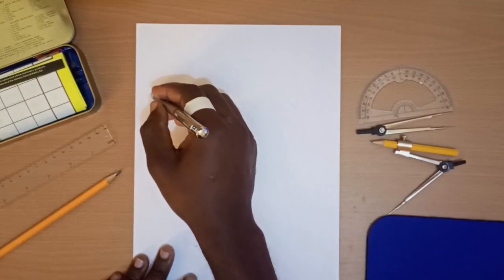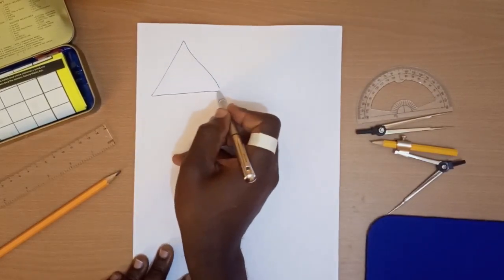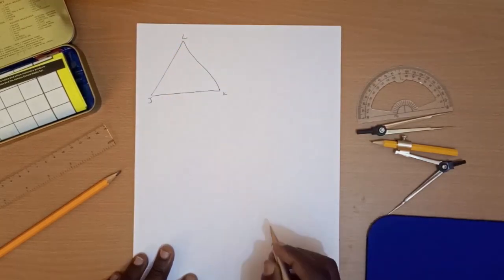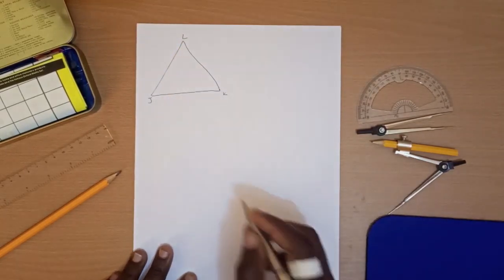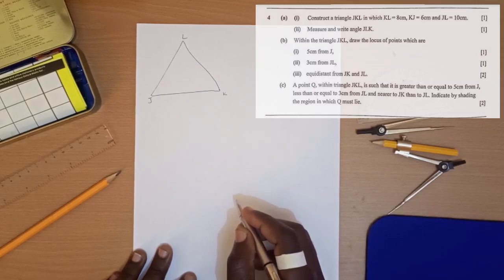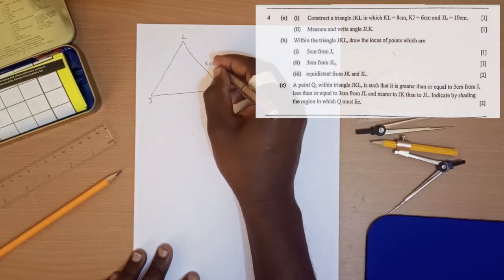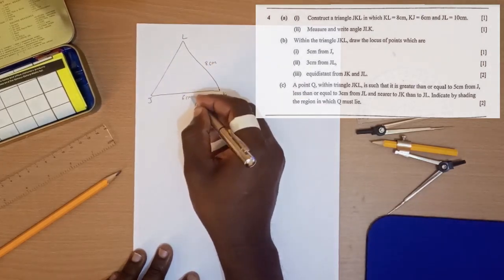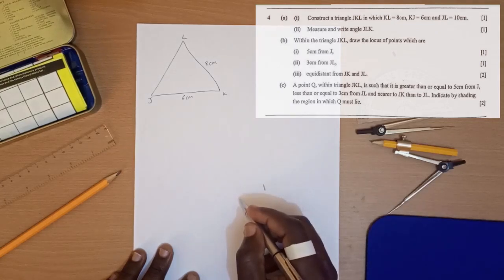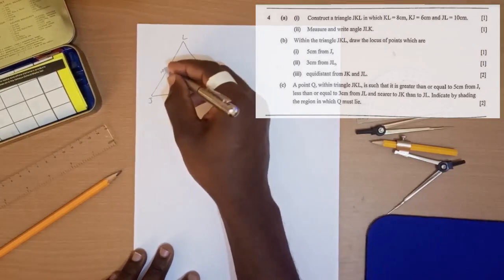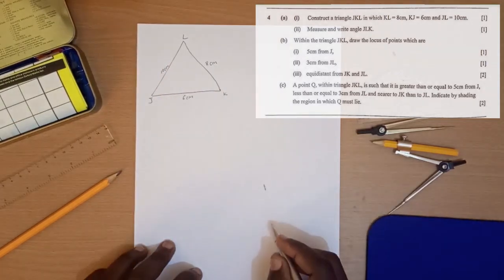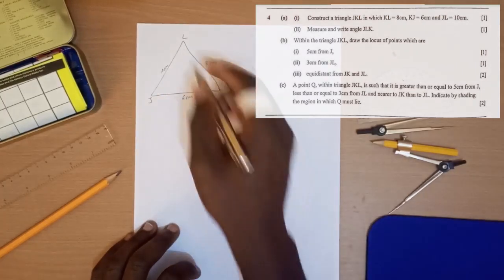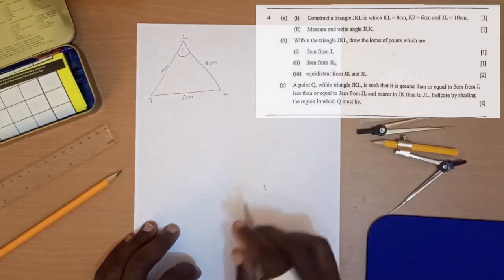We've been asked to construct the triangle JKL. KL is equal to 8 cm, KJ is equal to 6 cm, and JL is equal to 10 cm. Measure and write the angle JLK. That's the angle we're measuring and writing. Let's construct that.